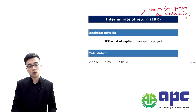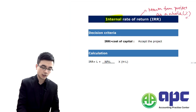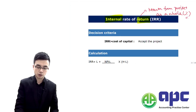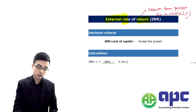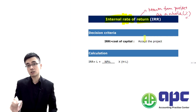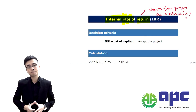We're going to calculate the return from the project as a whole in percentage terms. That's what I mean by internally generated from this project — the return in relative terms, not absolute terms. That's what I mean by IRR.